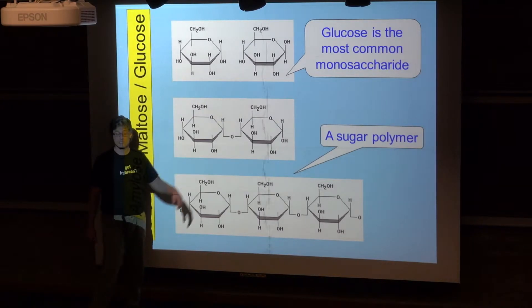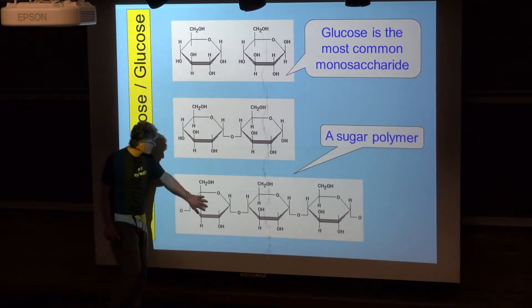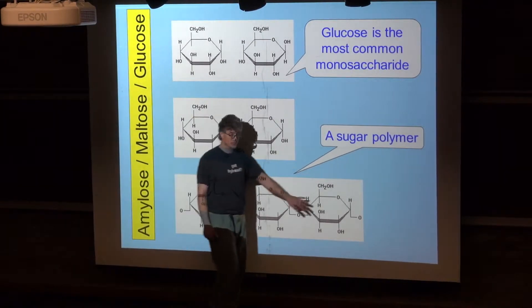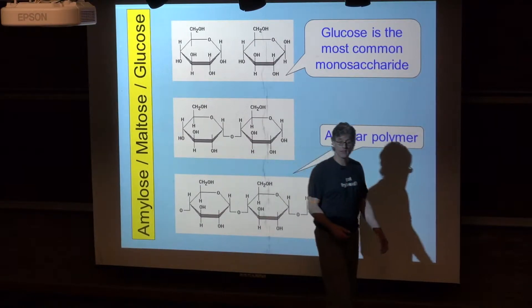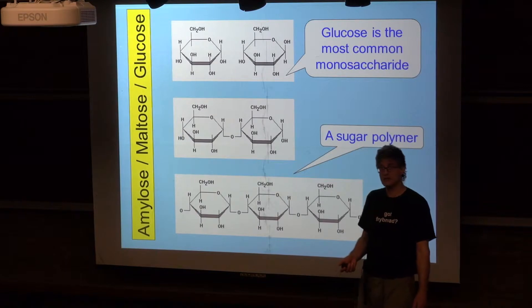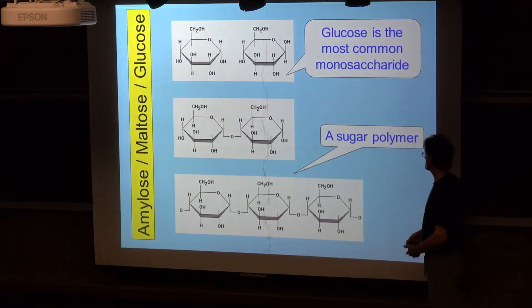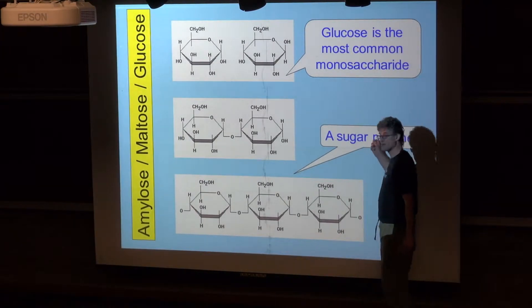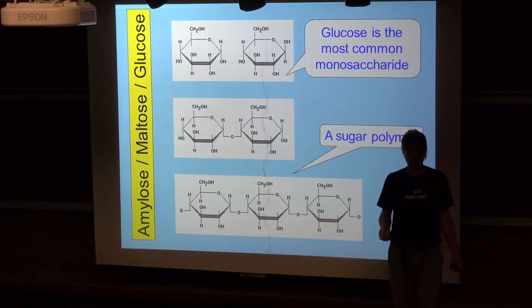And then you can keep this process going. So here we have multiple glucoses. Three are shown, all linked together by these 1,4 alpha glycosidic linkages. And this is the beginning of a polymer of sugars, of glucose, that's called the starch.